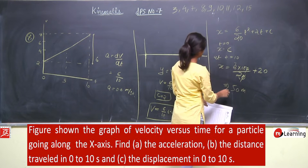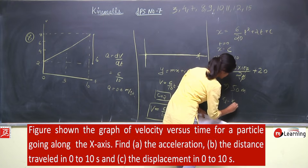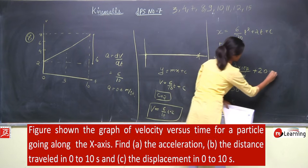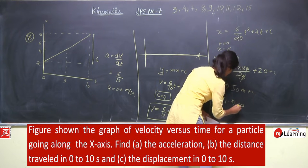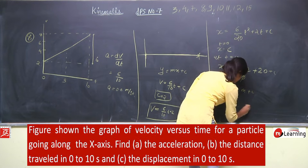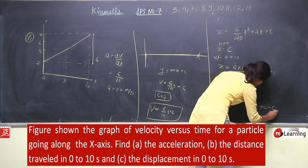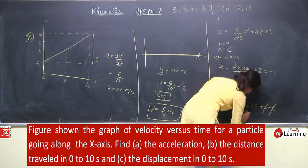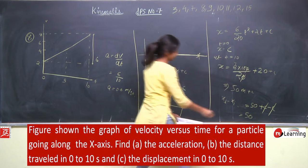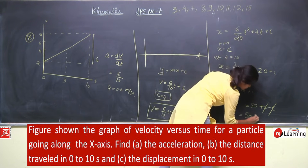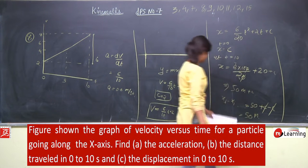Distance कितना जाएगा? x_final minus x_initial = 50 + c − c = 50 meter. This is the distance covered.